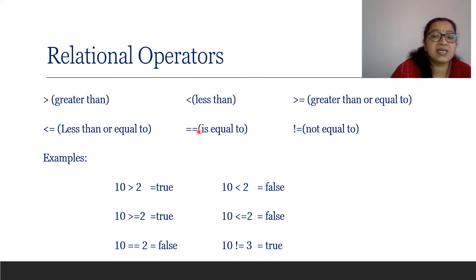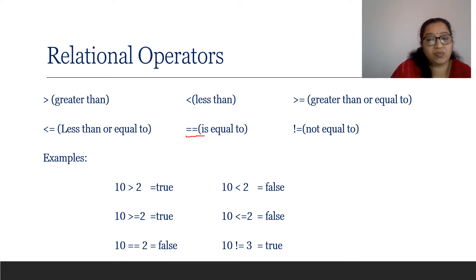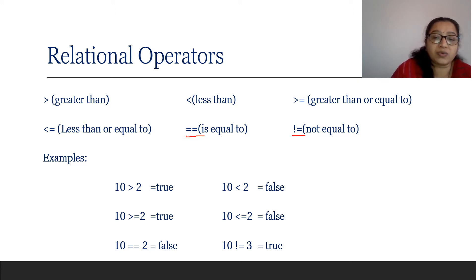For checking if a value is equal to another, we use double equal to in C++. And for not equal to, we use an exclamation mark followed by equal to. So these are the relational operators.